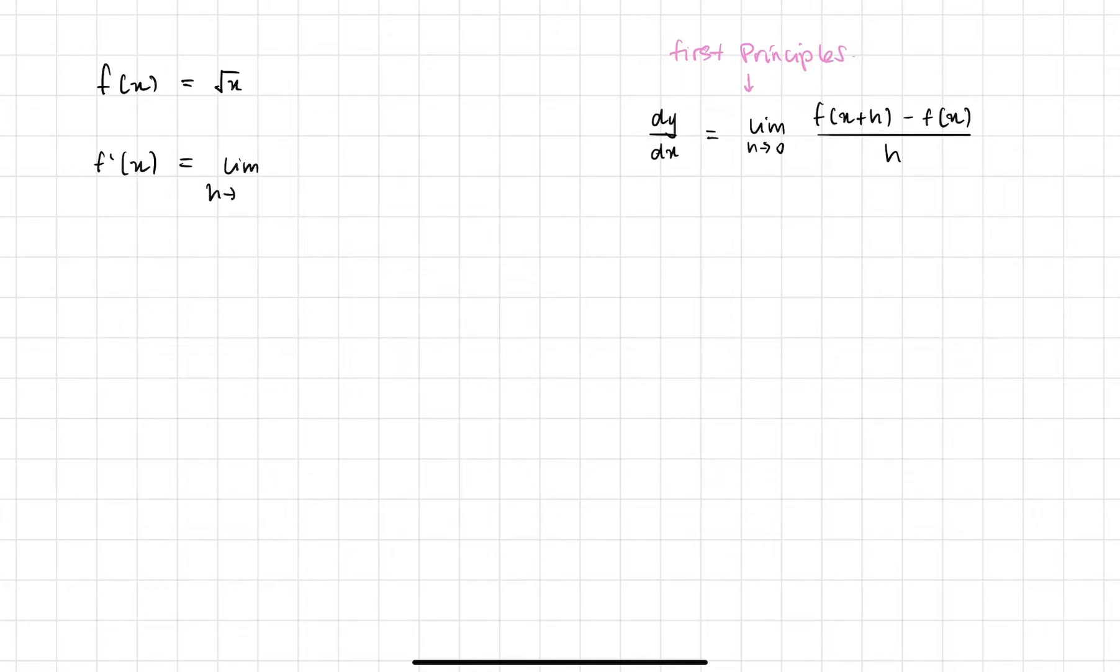So limit h approaches to 0, f(x+h). So our function is just square root x, so let's say x plus h with a square root minus the original function, divided by h.